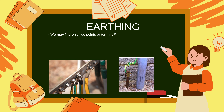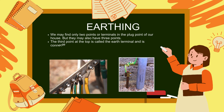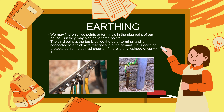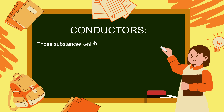Earthing: we may find only two points or terminals in the plug point of our house, but they may also have three points. The third point at the top is called the earth terminal and is connected to a thick wire that goes into the ground. Earthing protects us from electrical shocks — if there is any leakage of current in the appliance, it will flow through the thick wire into the earth.